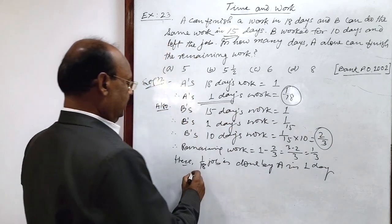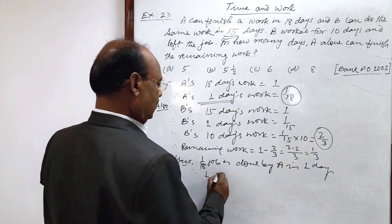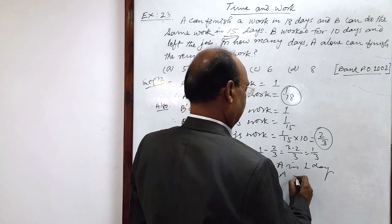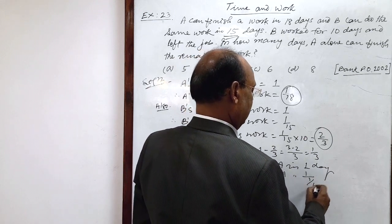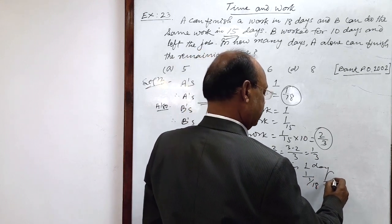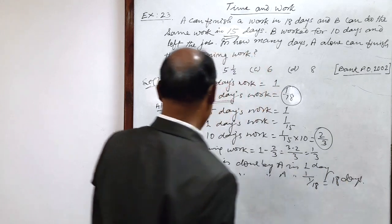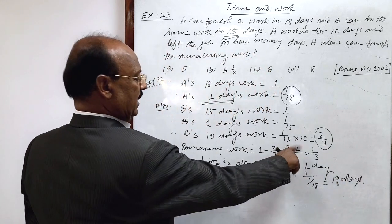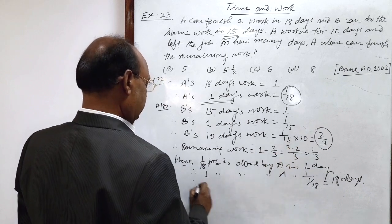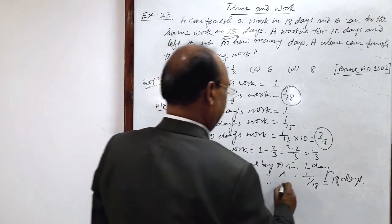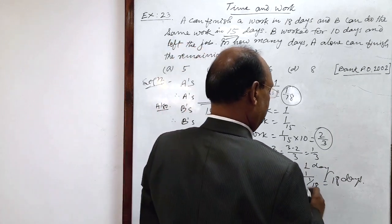By unitary method, therefore, 1 job is done by A in 1 divided by 1 upon 18. This is equal to 18 days. And 1 by 3 job...